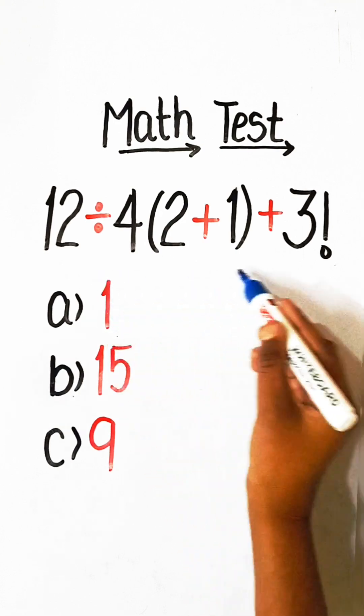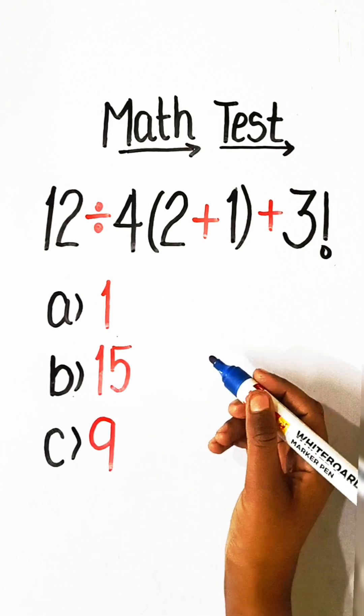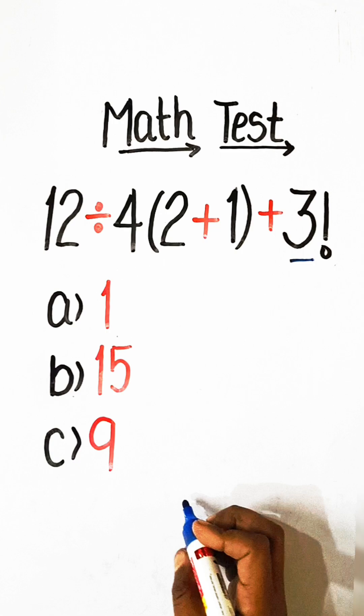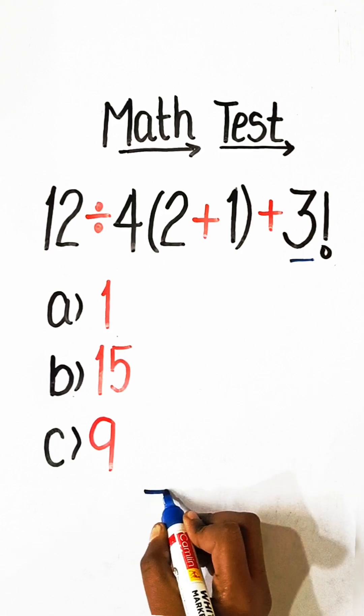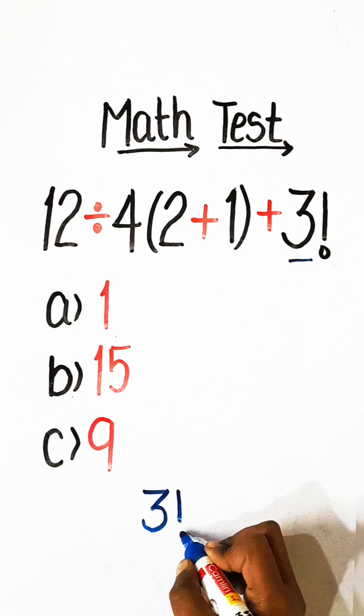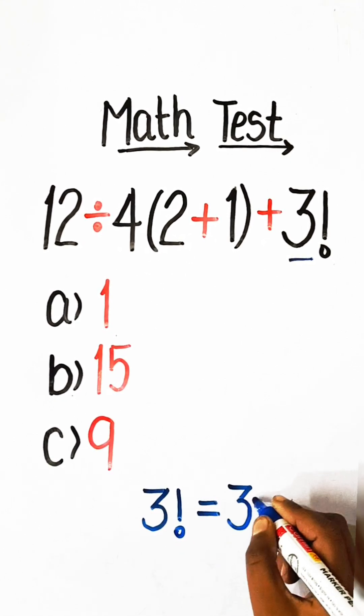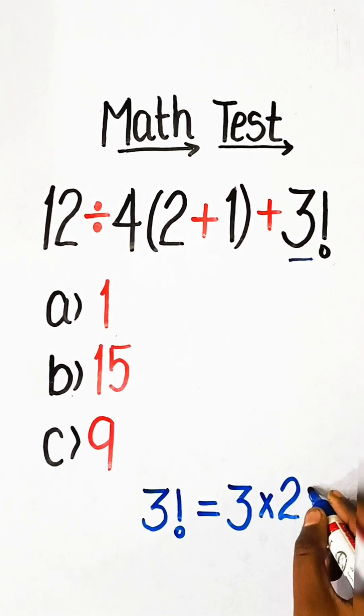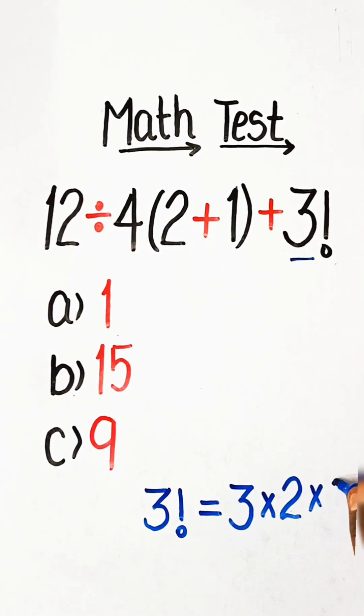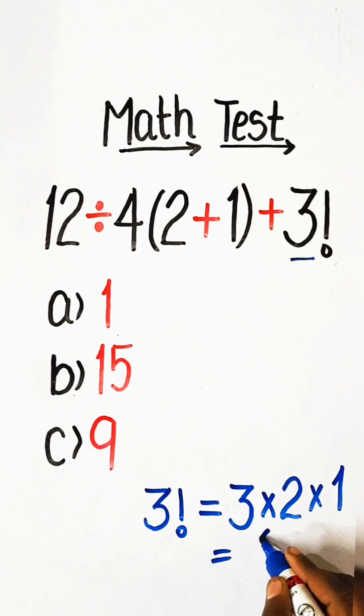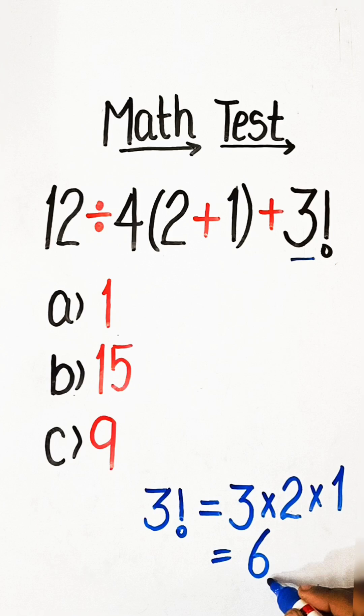So, let's solve this. First we have to know what is the value of 3 factorial. We will write here the value of 3 factorial equals to 3 multiplied by 2 multiplied by 1. 3 times 2 is 6. 6 times 1 is 6. So, the value of 3 factorial equals to 6.